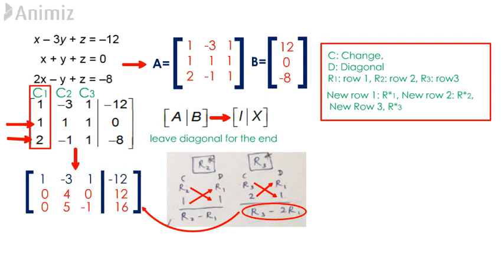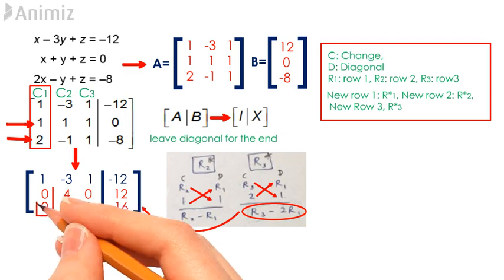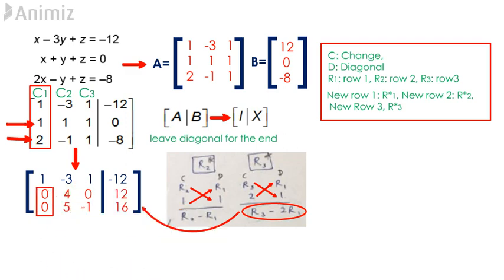Row 1 remains unchanged in this step, so we just rewrite all the elements from row 1 as they are. At this point, all the elements in column 1 besides the diagonal element have been changed to 0.